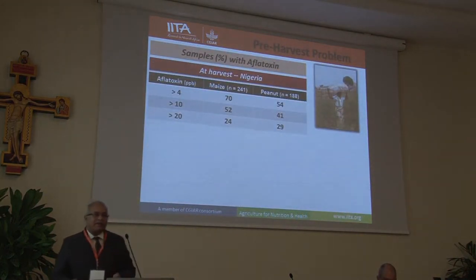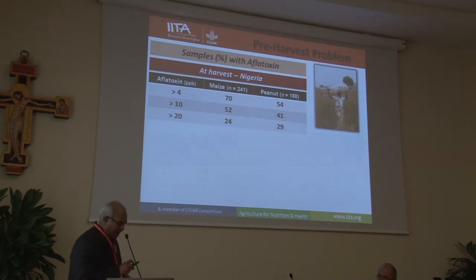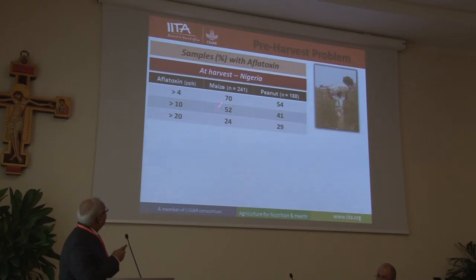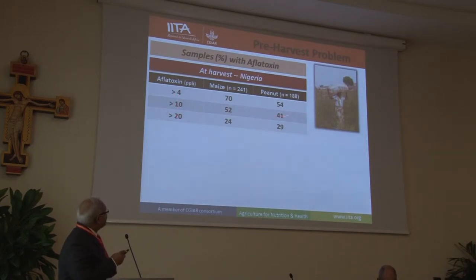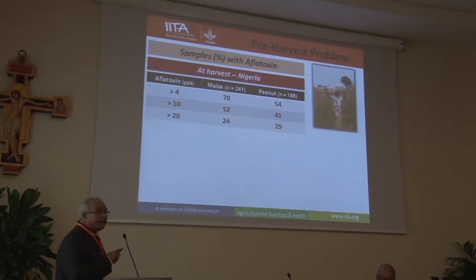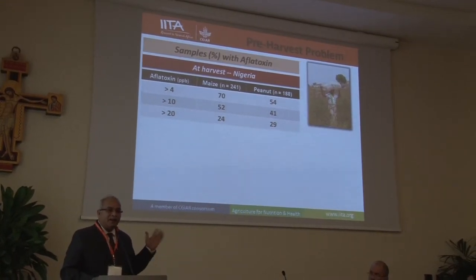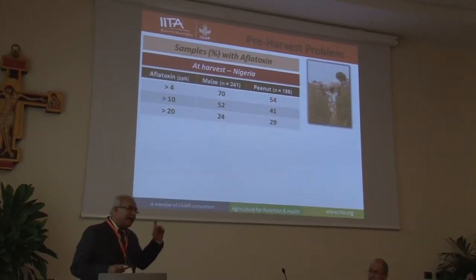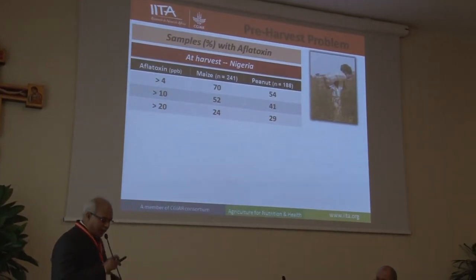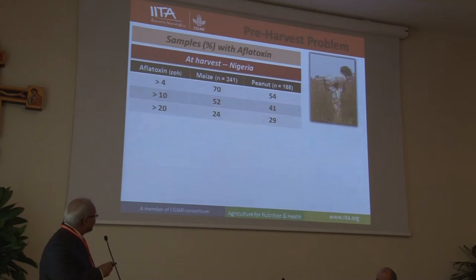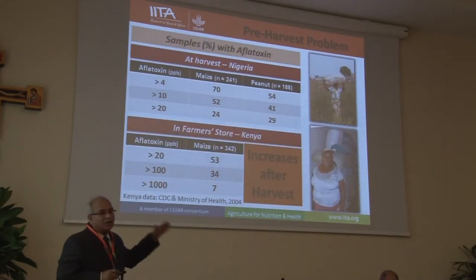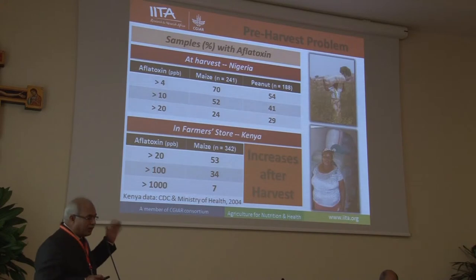Aflatoxin is a pre-harvest problem, and this data demonstrates it. As this lady in Nigeria is taking out the corn on her head, if you sample 241 samples and look at aflatoxin levels more than 4 ppb, 10 ppb, and 20 ppb — by the time she takes it out of the field, half the crop already has more than 10 ppb, which is the safe limit for Nigeria. So if we can stop the infection at that point, that helps in management. Subsequently, you see the contamination continuing to increase in the store after harvest.